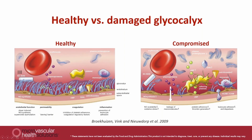A healthy glycocalyx not only allows the endothelium to produce nitric oxide in response to flow changes, but also captures enzymes that inactivate oxygen radicals. Additionally, the tight nature of these polysaccharides within the matrix means that the effective pore size — the openings between the polysaccharides — is only a few nanometers, forming a barrier against leakage of plasma proteins like albumin. With a healthy glycocalyx, albumin stays within the bloodstream and does not leak into the vessel wall.